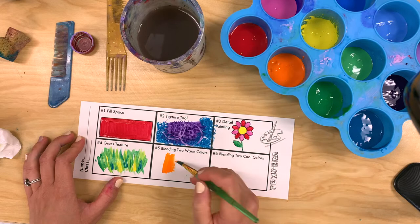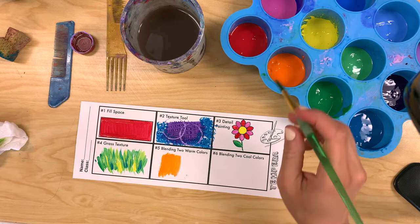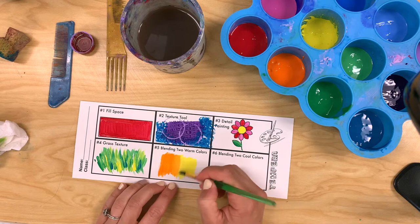Technique number five is blending with two warm colors. Remember warm colors remind us of fire or the sun. So this would include yellow, orange, red and sometimes pink too. You're going to choose two of these colors to blend from one into the other.